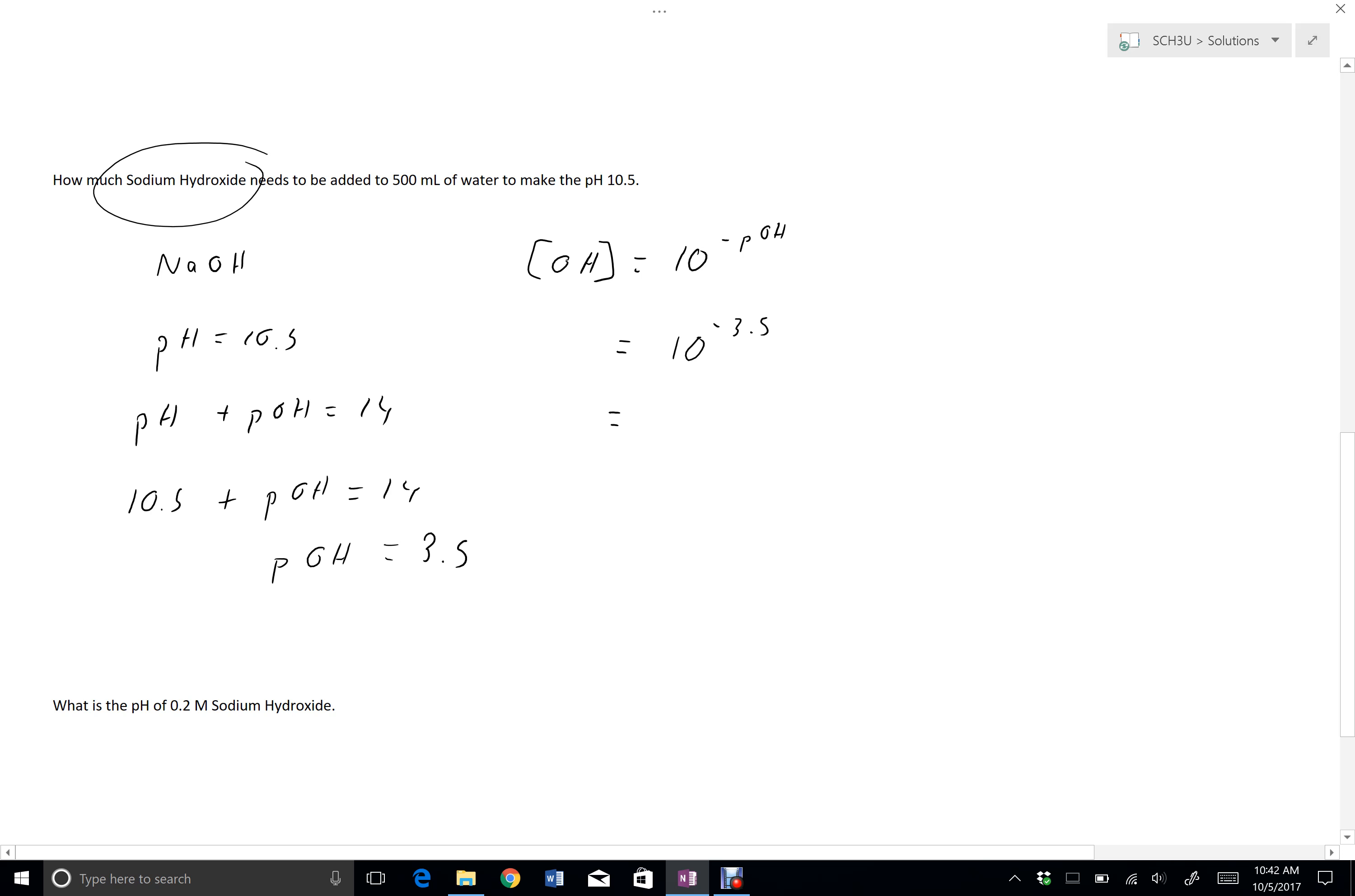So, just putting that into a calculator, I get 3.16 times 10 to the negative 4. So that's my concentration. I have a volume, so I can go ahead and find how many moles of solute would be associated with that.